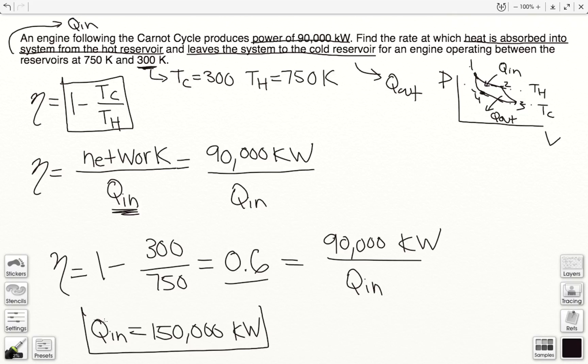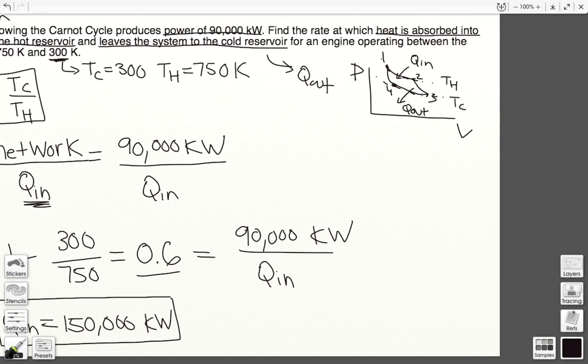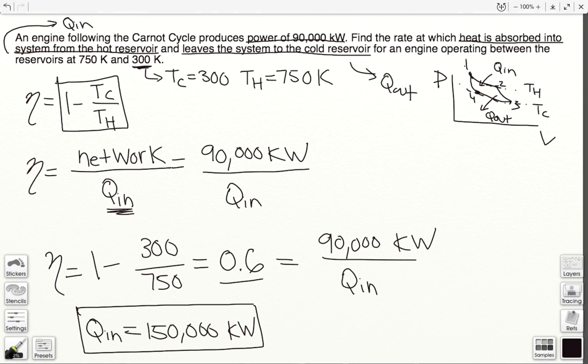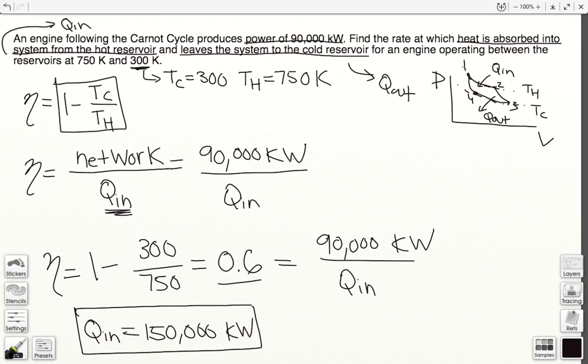That is the heat absorbed into the system from the hot reservoir. Okay, so now we need to find our Q_out, the heat that leaves the system to the cold reservoir. So, back to this, net work,